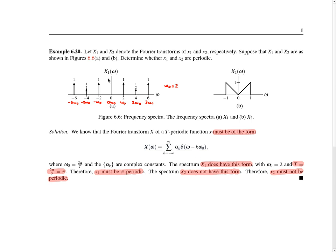Looking at the graph in figure a, the graph of big X1 clearly has the form of a sum of delta functions shifted by integer multiples of the same value omega naught — in this case omega naught equals 2 — scaled by various amounts and summed together. Since big X1 has this impulse-train form, it does correspond to a periodic function. Since omega naught equals 2, this corresponds to a function with period pi, so little x1 must be periodic with period pi.